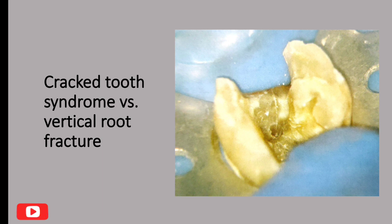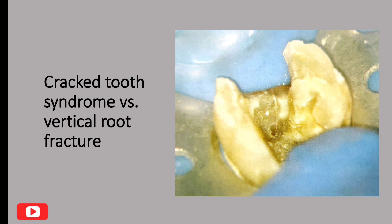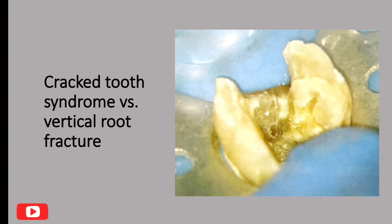In contrast, a vertical root fracture is distinguished by a crack that extends from the tip of the root towards the cervical margin. Let me know in the comments how useful this tip was.